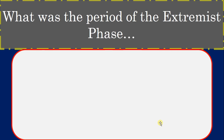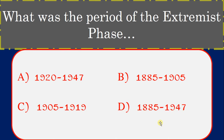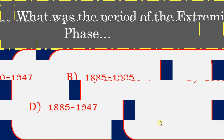What was the period of the extremist phase? Options: 1922, 1947, 1885 to 1905, 1905 to 1919, 1885 to 1947. Correct answer: 1905 to 1919.